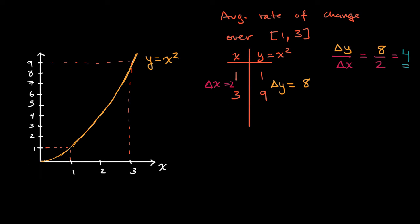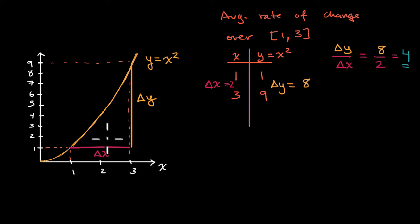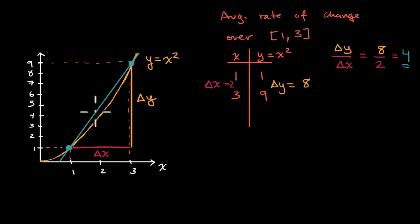How did we calculate that? We looked at our change in x and our change in y, and calculated change in y over change in x for average rate of change. This might look familiar, because you're used to thinking about change in y over change in x as the slope of a line connecting two points. And that's indeed what we calculated — if you draw a secant line between these two points, we essentially just calculated the slope of that secant line.